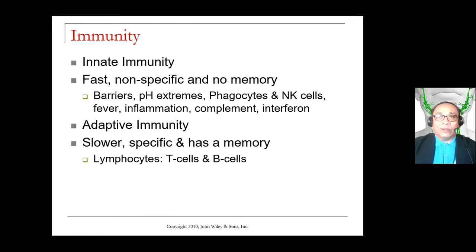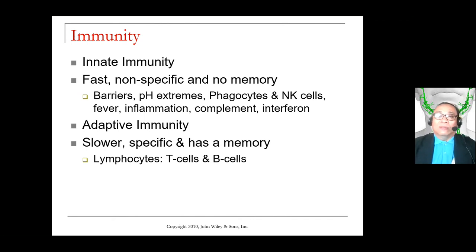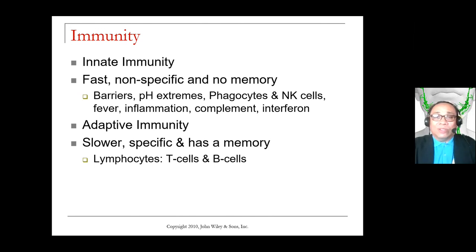Phagocytes and natural killer cells are white blood cells which also play a major role in immunity. Fever is also one — it is very good for us despite seeming bad. Inflammation is non-specific. Complement and interferon are involved in complex reactions or activities involving innate immunity, very much like in the process of coagulation wherein there is a cascade of clotting factors to ensure that the blood coagulates when bleeding occurs.